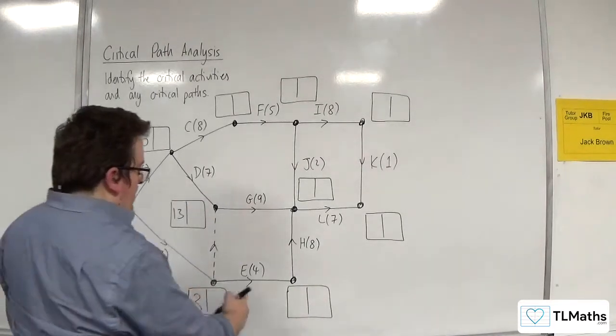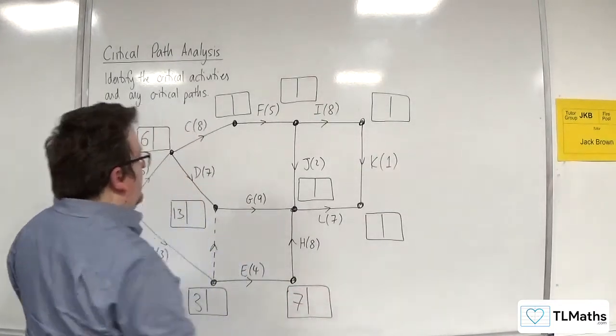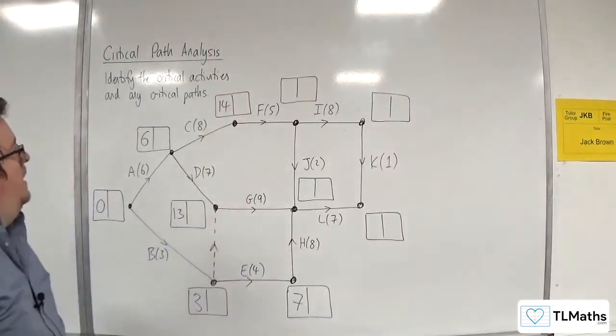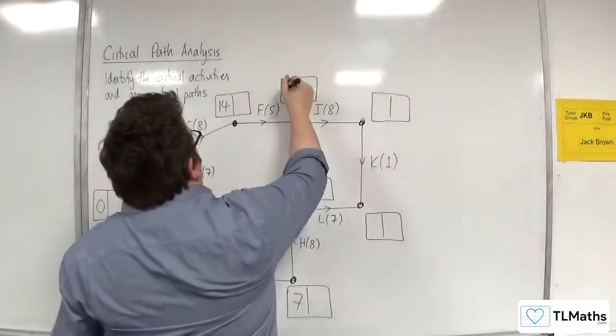So 3 plus 4 is 7. I'll do that one next. We've got 6 plus 8, so 14. And we've got 14 plus 5, so 19.